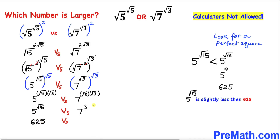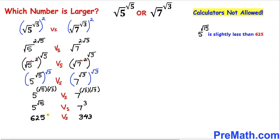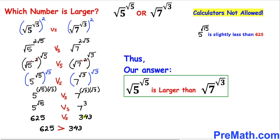The right hand side number 7 raised to the power 3 is equal to 343. We can see that the left hand side number is larger than the right hand side number, and since the left hand side number is larger, we conclude that square root of 5 raised to the power square root of 5 is indeed larger than square root of 7 raised to the power square root of 3.